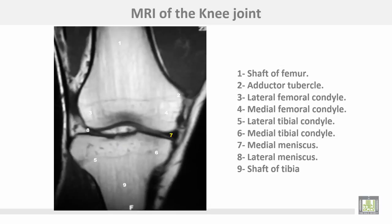This MRI of the knee joint shows the shaft of the femur, the adductor tubercle, the lateral condyle of the femur, the medial condyle, and the medial tibial condyle. Inside the knee joint, this is the medial meniscus and this is the lateral meniscus, and this is the shaft of the tibia.